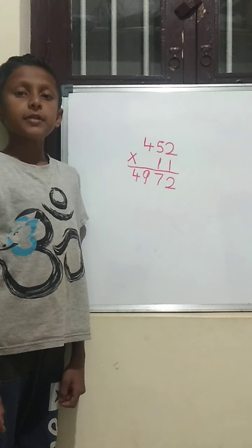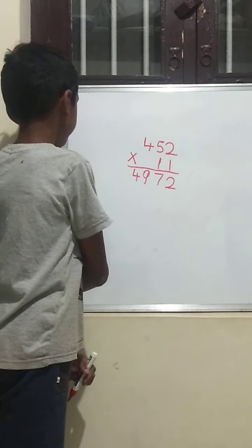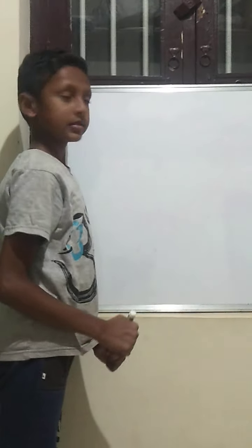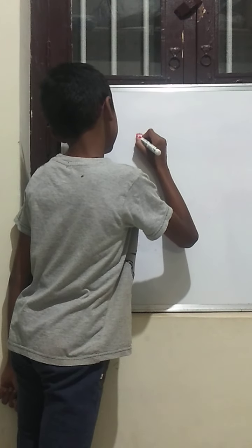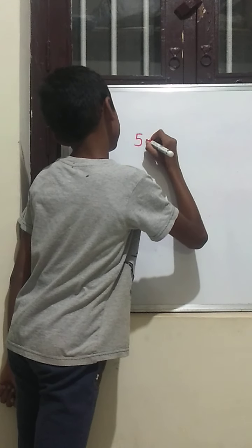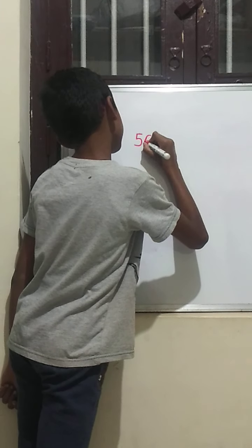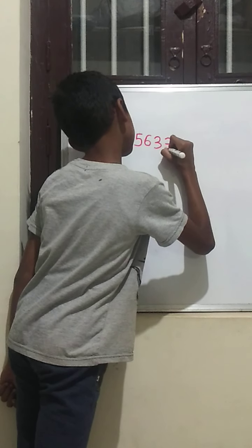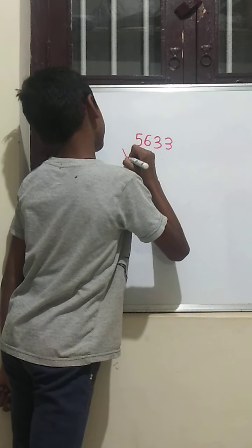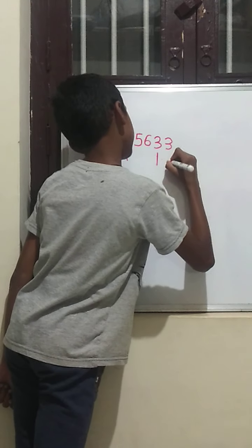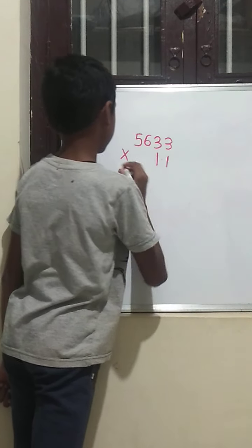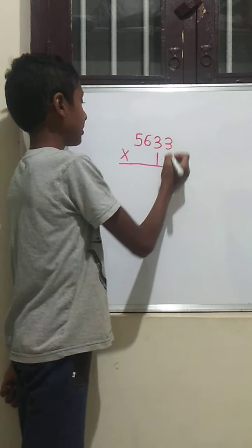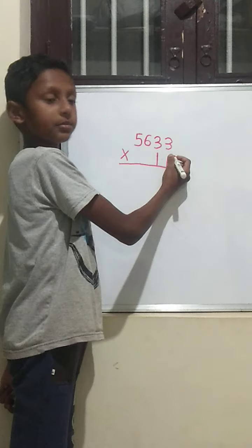5,633 multiplied by 11. We should write the first number as it is.